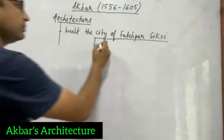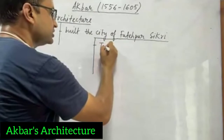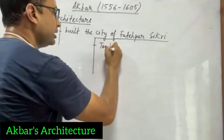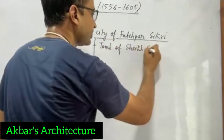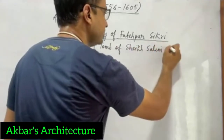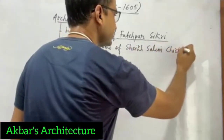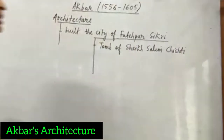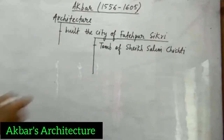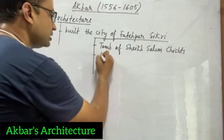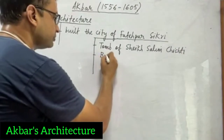The most important structure here is the Tomb of Sheikh Salim Chishti. He was a Sufi saint and Akbar was deeply influenced by him. The Tomb of Sheikh Salim Chishti is located in Fatehpur Sikri.